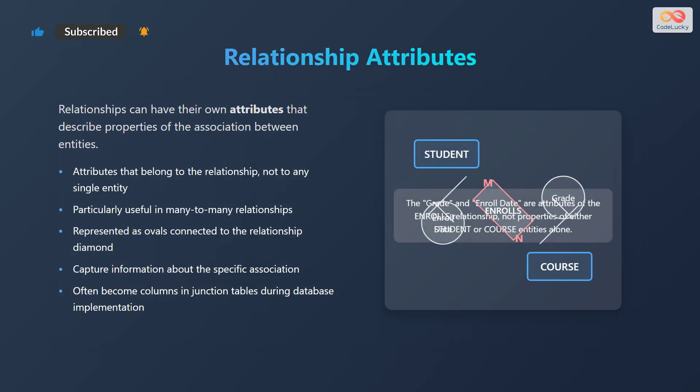Relationships can have their own attributes that describe properties of the association between entities. These attributes belong to the relationship, not to any single entity, and are particularly useful in many-to-many relationships. Relationship attributes are represented as ovals connected to the relationship diamond and capture information about the specific association. For example, in the enrollment relationship between student and course entities, grade and enroll date are attributes of the enrolls relationship.